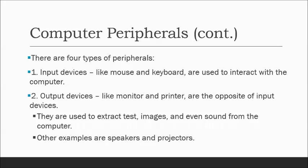Input devices: the computer accepts data from the peripherals. Output devices, on the other hand, refer to your monitor and your printer — they are the opposite of input devices. Output devices display figures and videos, produce printed documents, and are used to extract text, images, and even sound from the computer. Your speaker is an example of an output device.